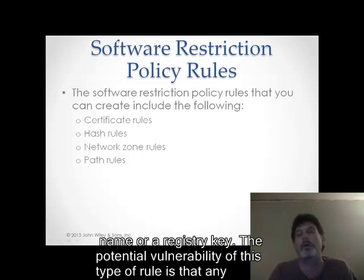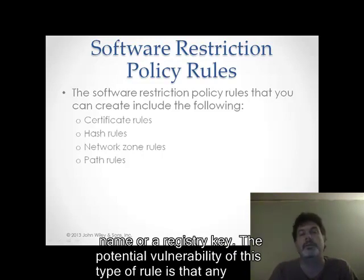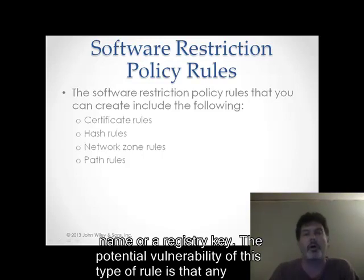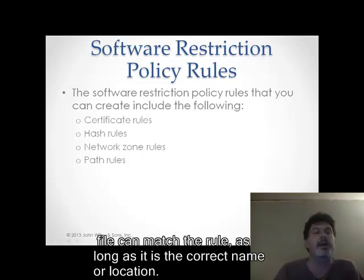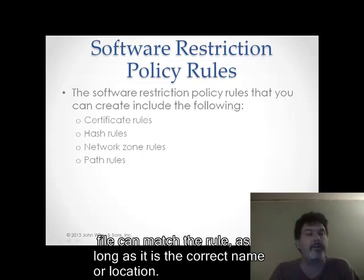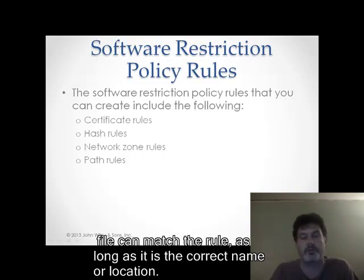Path rules are probably the most common rule that we see software restriction policies used. Particularly good in a network setting when a network administrator has a shared folder where all the software that is going to be deployed in their network environment is stored. Therefore, creating a path rule allowing software to come from only that software share path will be allowed to install on the workstation, thereby increasing the security of the workstation environment.